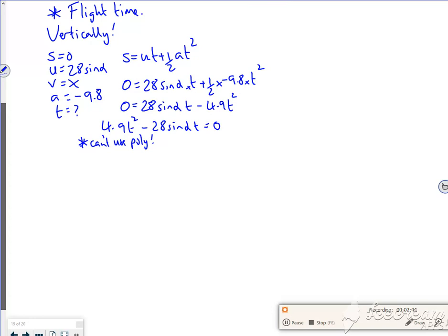So if I took out t as a factor, I've got t(4.9t - 28 sin alpha) = 0. So what I've got here is t equals nothing. So that's when it's set off. But this one here, 4.9t - 28 sin alpha = 0.